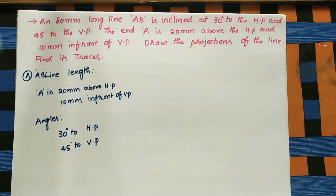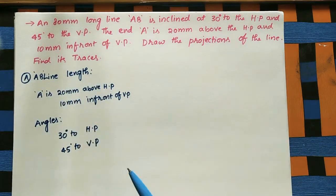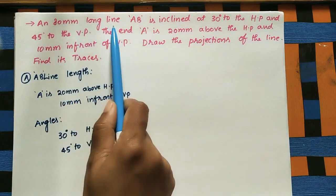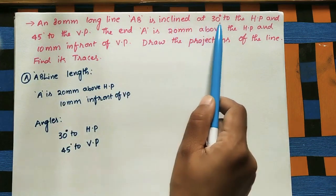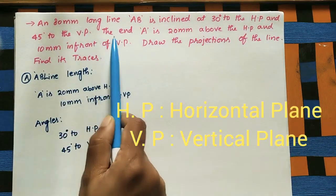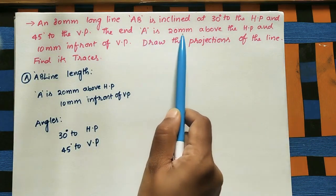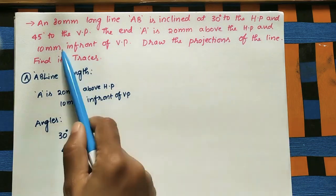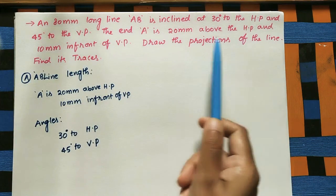Welcome to my channel. Let us discuss how to find the projections of an inclined line and also find its traces. The given data: line AB is 80 mm long, inclined at 30 degrees to the HP and 45 degrees to the VP. End A is 20 mm above the HP and 10 mm in front of the VP.